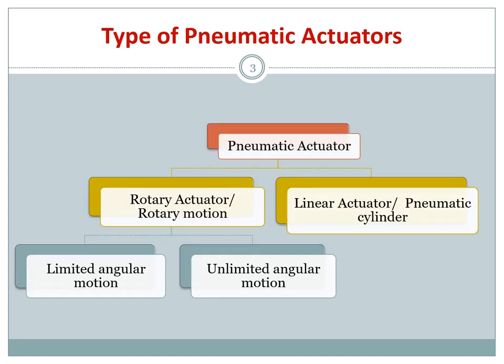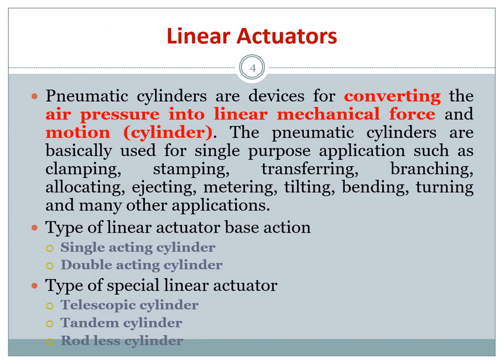Pneumatic actuators are divided into two types: linear actuators, which only have translational movement front and back, and rotary actuators, which cause the actuator to turn to do the work.